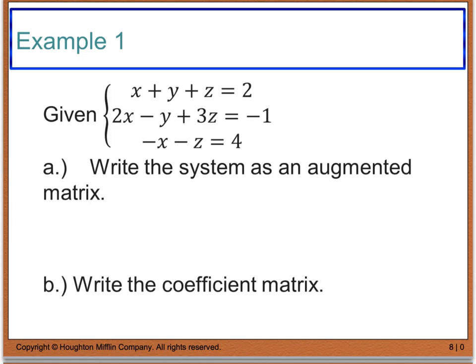Looking at example 1, we are given a system and we want to write it as an augmented matrix. An augmented matrix uses brackets, and I'm going to take the coefficient of each term. For the first row, I have 1x, 1y, 1z. For the augmented part, I put dots here to separate the coefficients from the constants, then place my constant of 2.